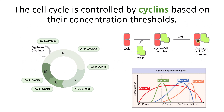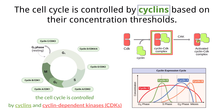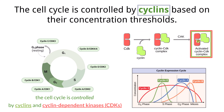The cell cycle is a process that is controlled by specific molecules that allow the cell to move from phase to phase at specific times. Two important classes of molecules that control the cell cycle are cyclins and cyclin-dependent kinases, or CDKs. Cyclins bind to CDKs, phosphorylating them, which allows the CDKs to function as enzymes.